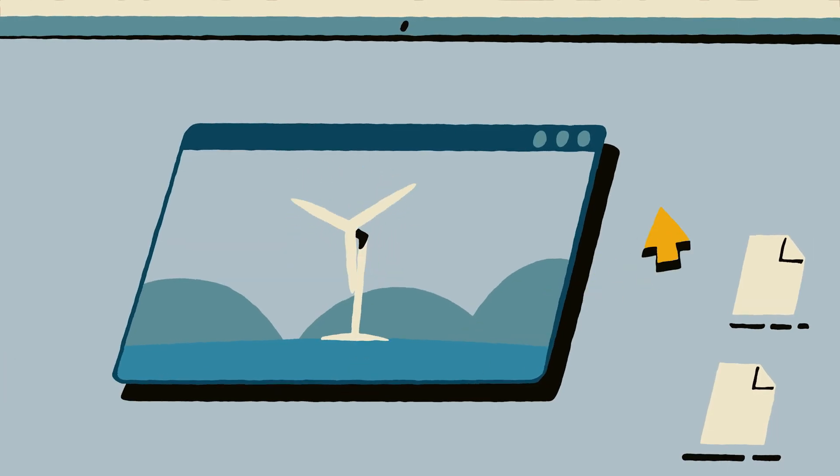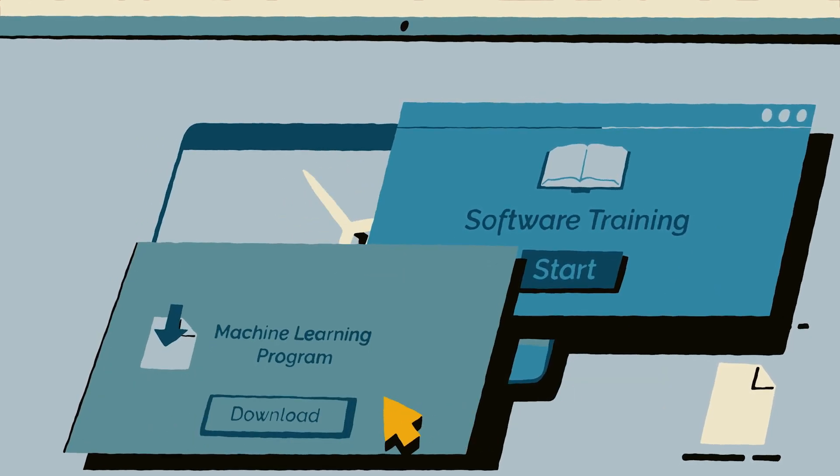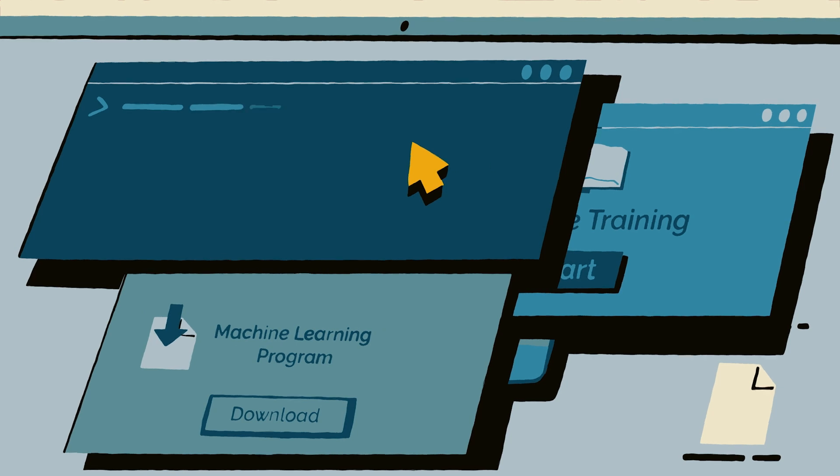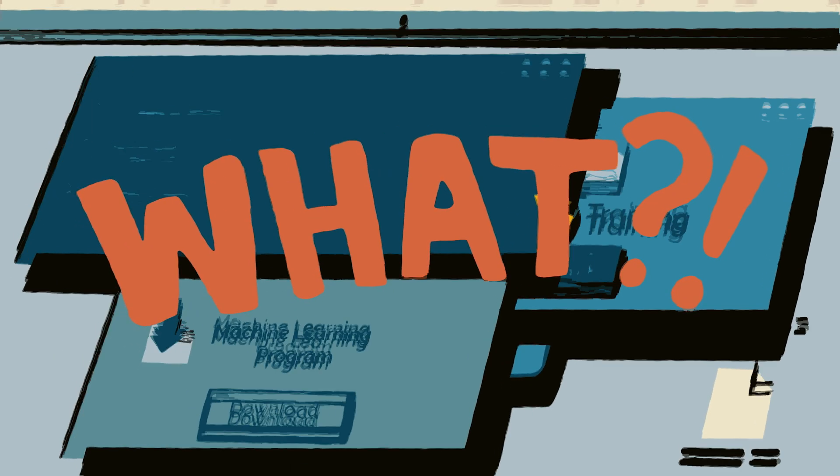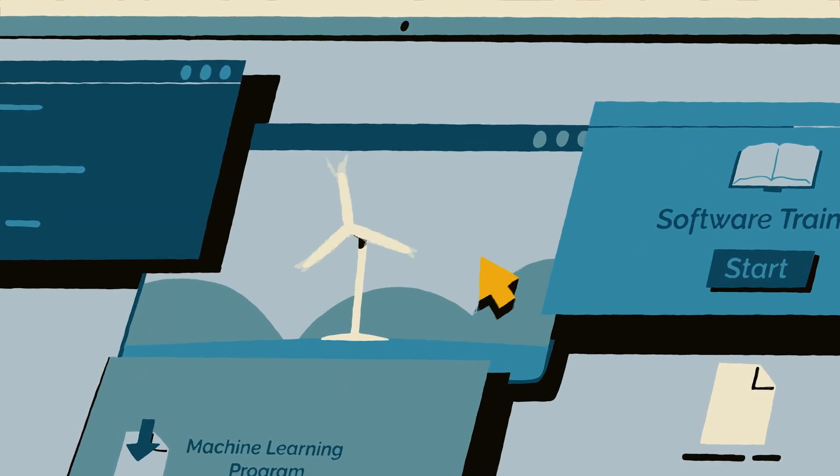Her first project task from her graduate student mentor is to complete some software training, download a machine learning package on her computer, and try to write code to run the machine learning algorithms using a sample dataset from her mentor. What? How could this machine learning stuff possibly have anything to do with clean energy?